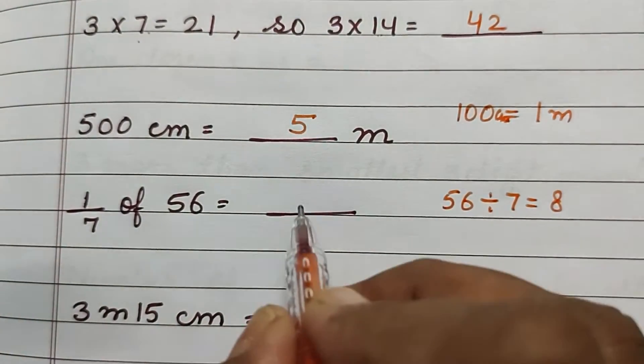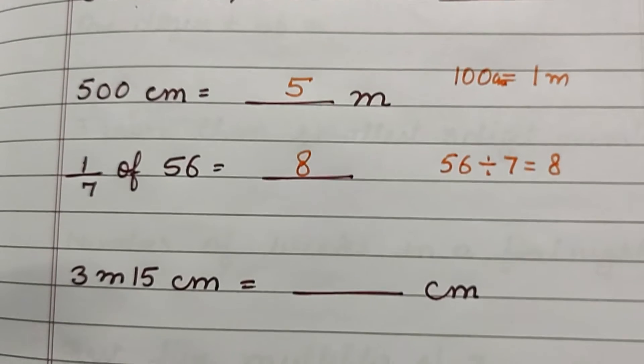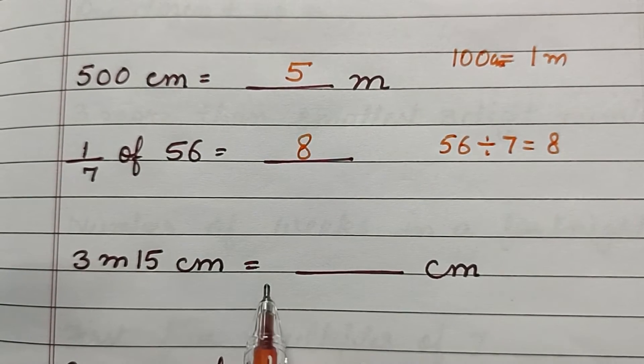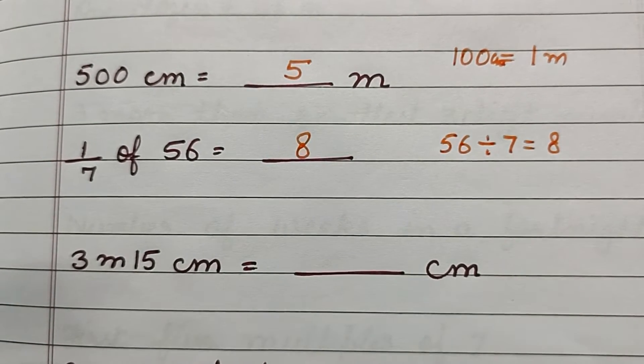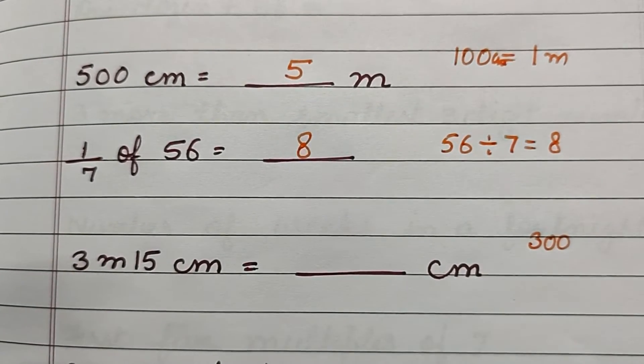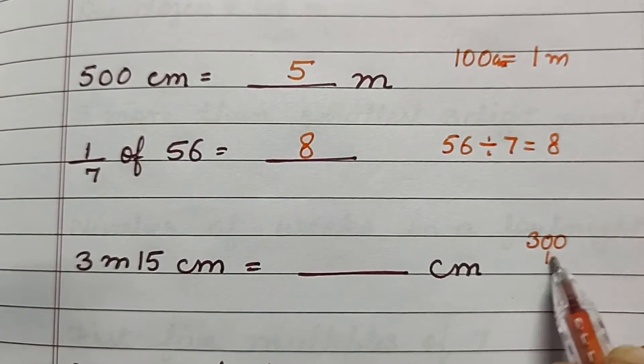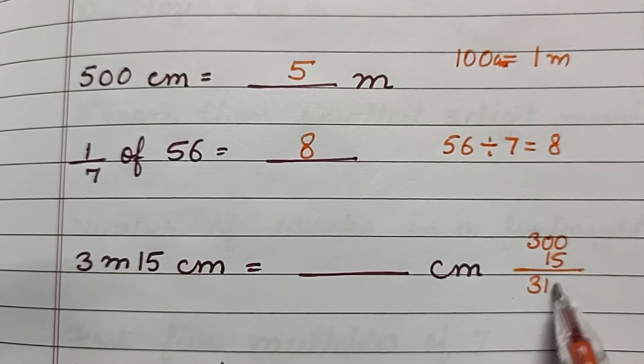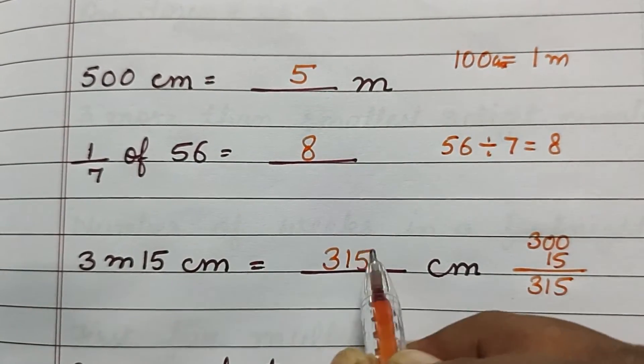3 meters 15 centimeters is equal to how many centimeters? 3 meters is equal to 300 centimeters, and we will add 15 to it and get 315. So the answer is 315 centimeters.